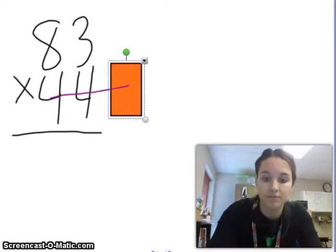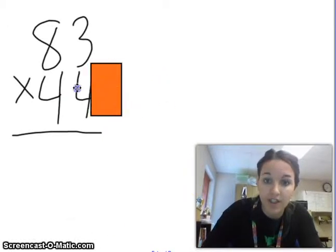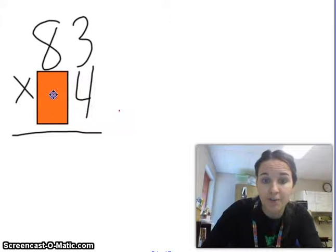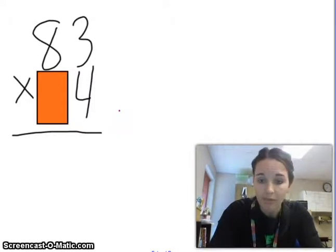So, we're going to start with the ones. We're going to start with the ones. So, by covering up that 40, I'm looking at 83 times 4. Now, I'm going to use different colors for both of our partial products so that you can see the difference. So, we'll start with blue.